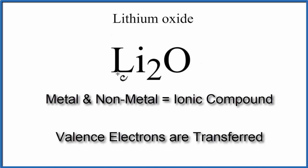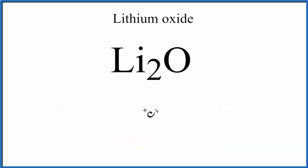That means each lithium atom will transfer a valence electron to the oxygen. So let's write oxygen in the middle and lithium on either side. When we look on the periodic table, we can see lithium is in group one on the periodic table. That means it has one valence electron.